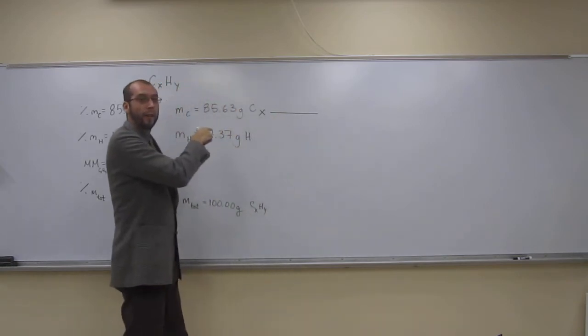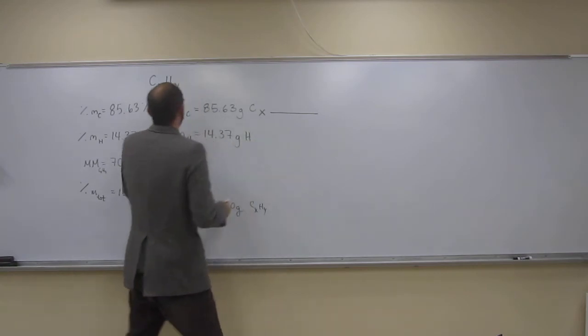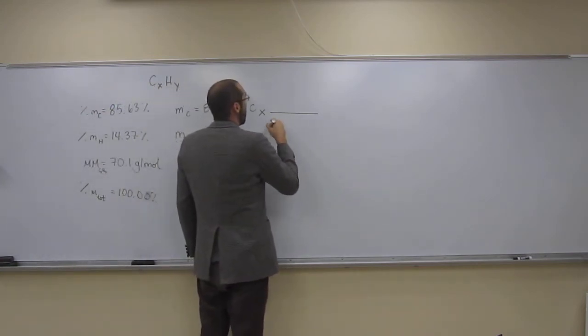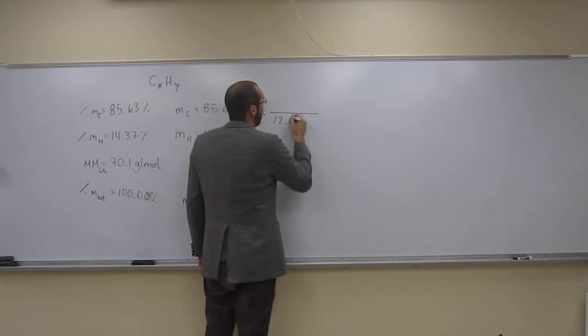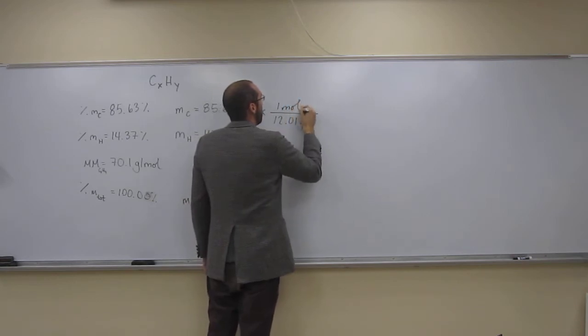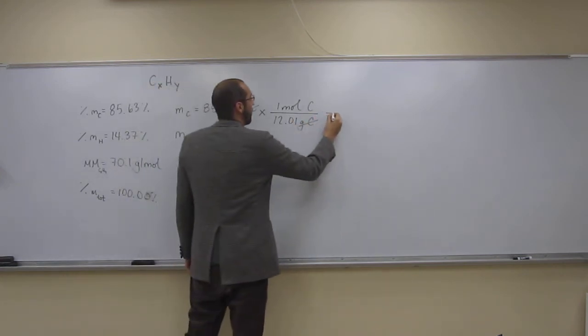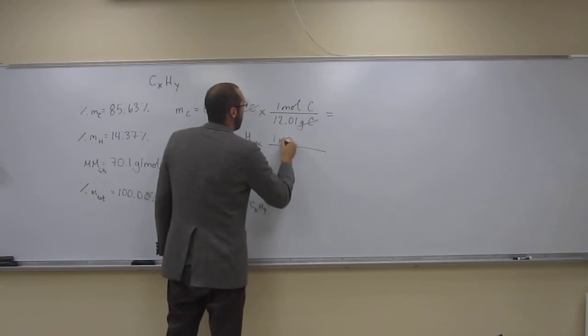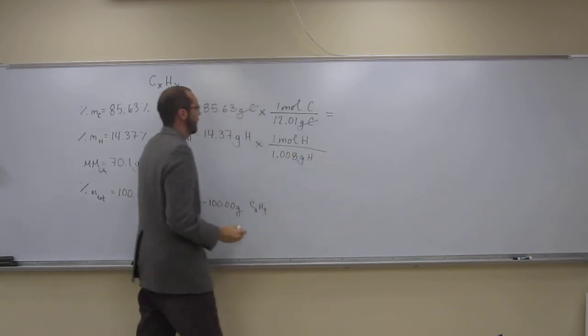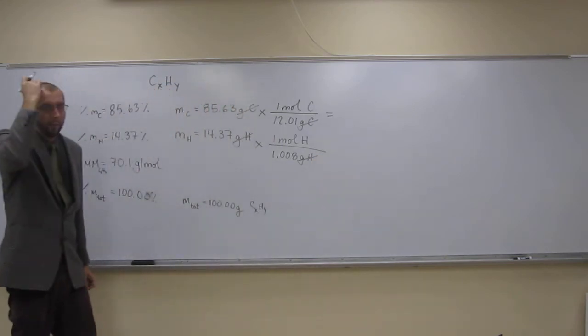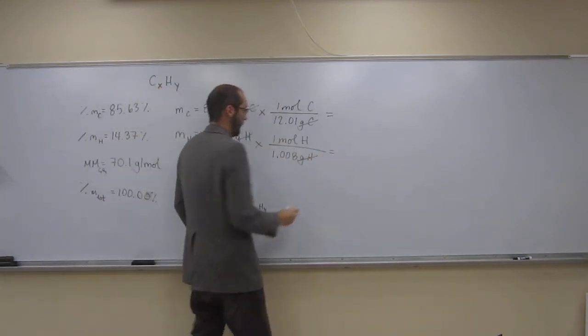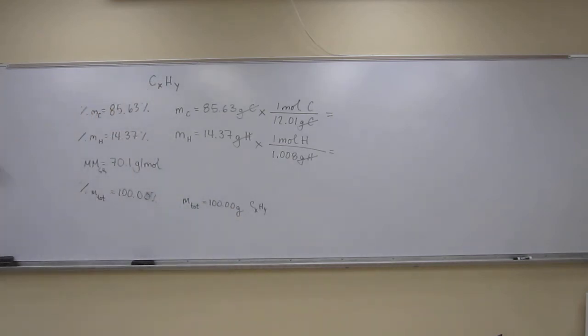So, remember, we need to convert these to moles. Because we need the molar ratio of X to Y. So, carbon, one mole of carbon is 12.01 grams of carbon. That's going to cancel out our grams of carbon. So, one mole of hydrogen is 1.008 grams of hydrogen. Remember, I'm getting these numbers from the periodic table. I've done these so many times, but you can look at the periodic table.